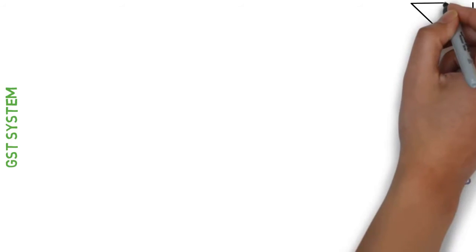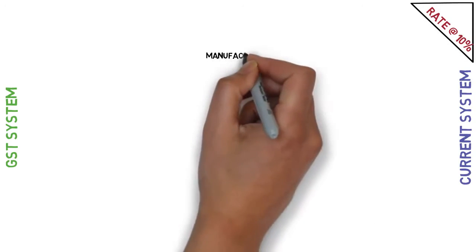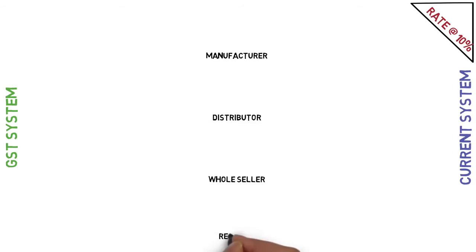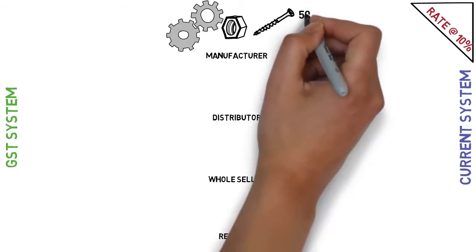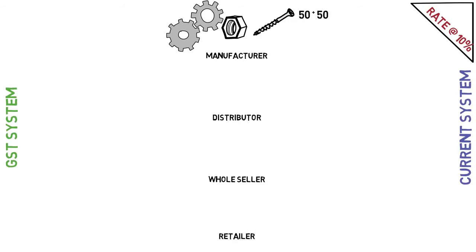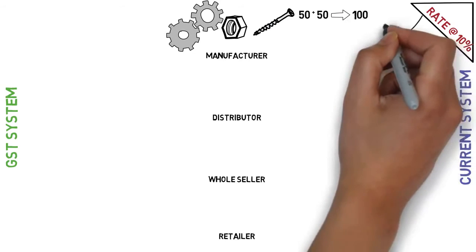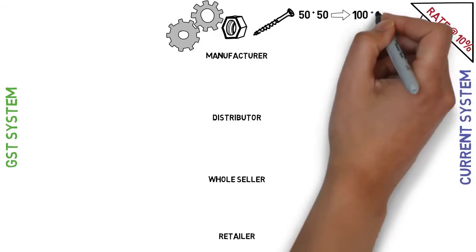The question is how GST is different from the current taxation system in India. I will explain this with a simple example. Consider a simplified tax rate of 10% at each level. There are generally four levels: manufacturer, distributor, wholesaler, and retailer. The manufacturer buys raw material of Rs. 50 and manufactures the product, adding Rs. 50 value to it, so the product becomes Rs. 100. For selling this product he pays 10% tax, which is Rs. 10.